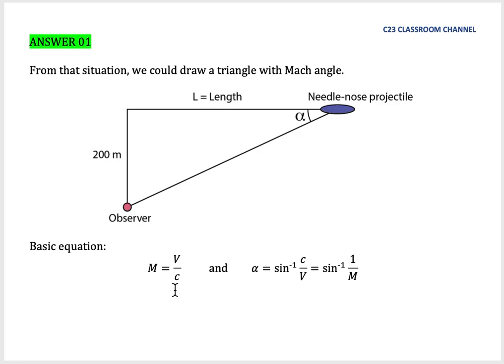We need to understand and remember two basic equations for this tutorial. One is Mach number M equals velocity of the object divided by speed of sound. And alpha can be calculated by using arcsin of c over v, or arcsin of 1 over M.